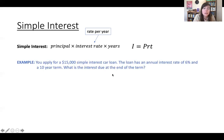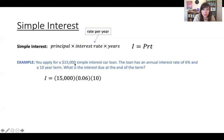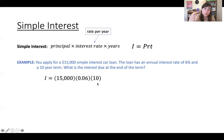Suppose you apply for a $15,000 simple interest car loan. The loan has an annual interest rate of 6% and a 10-year term. What is the interest due at the end of the term? Using the simple interest formula, the principal is 15,000, the rate is 6% converted to a decimal — 0.06 — and the term is 10 years. So assuming you take out that $15,000 loan and don't repay anything for 10 years, the interest due at the end of that 10-year period is $9,000.